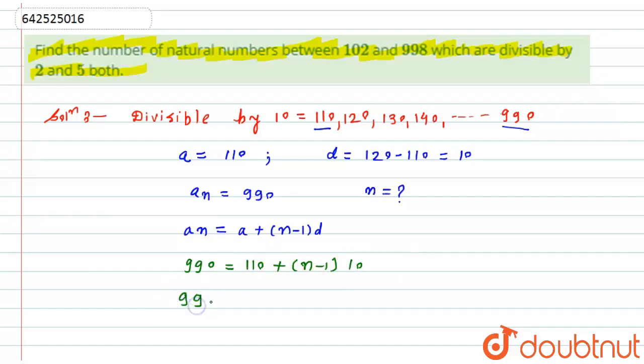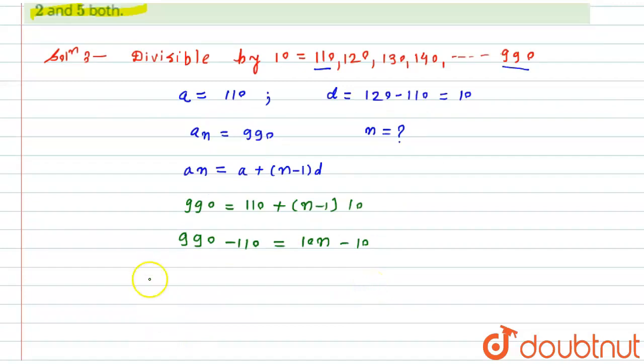Now this 110 will go to that side, so this will become 990 minus 110 equals - I will multiply 10 inside the bracket - it will become 10n minus 10.